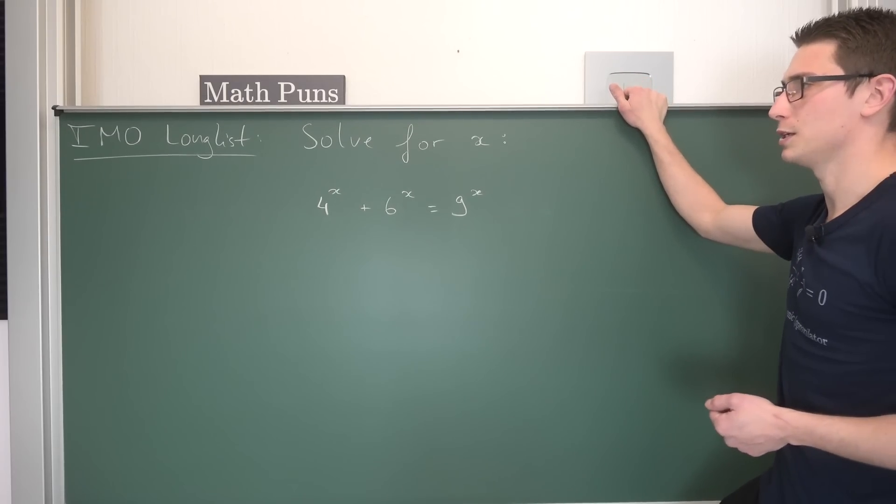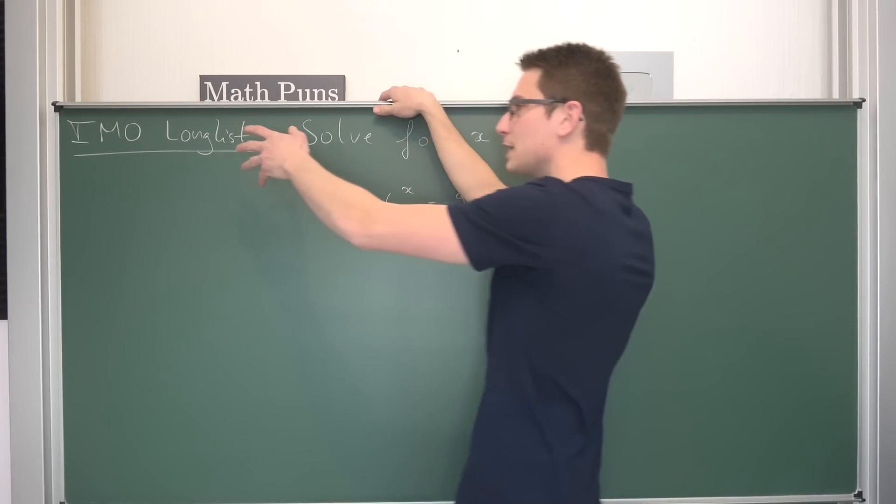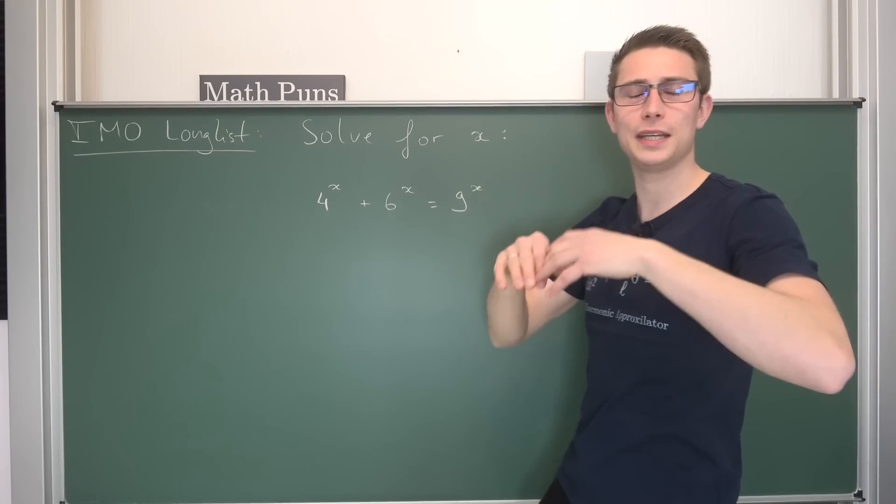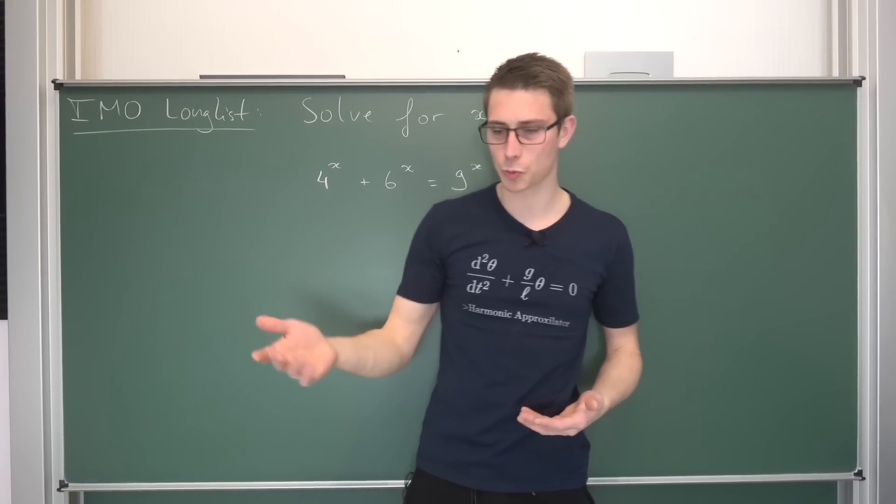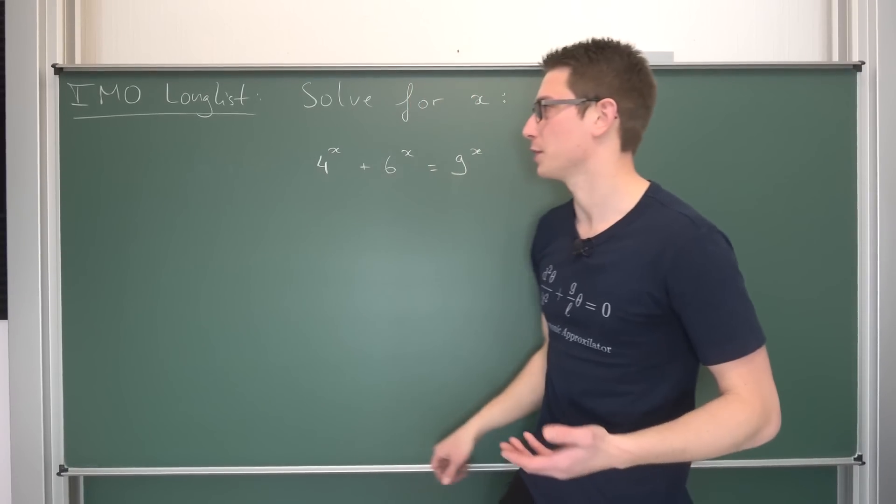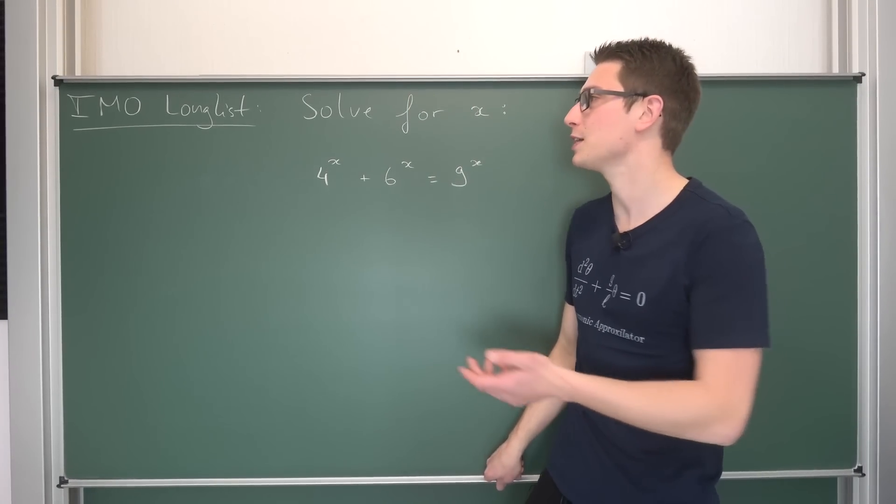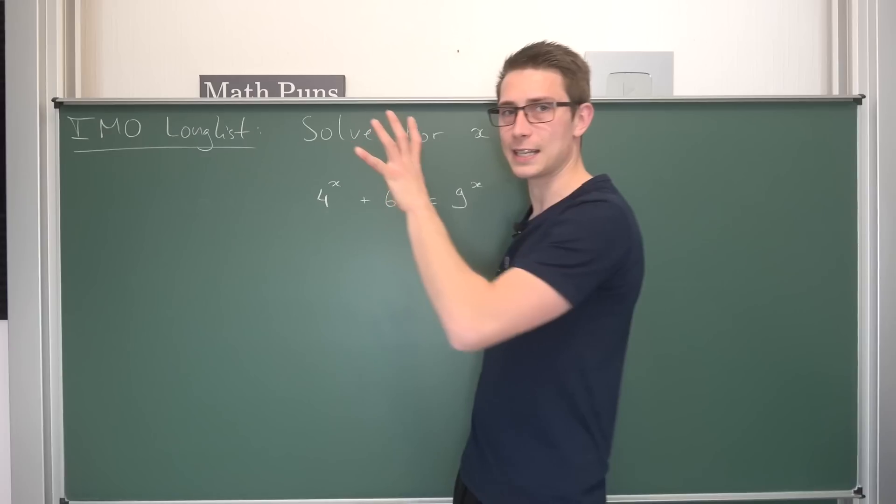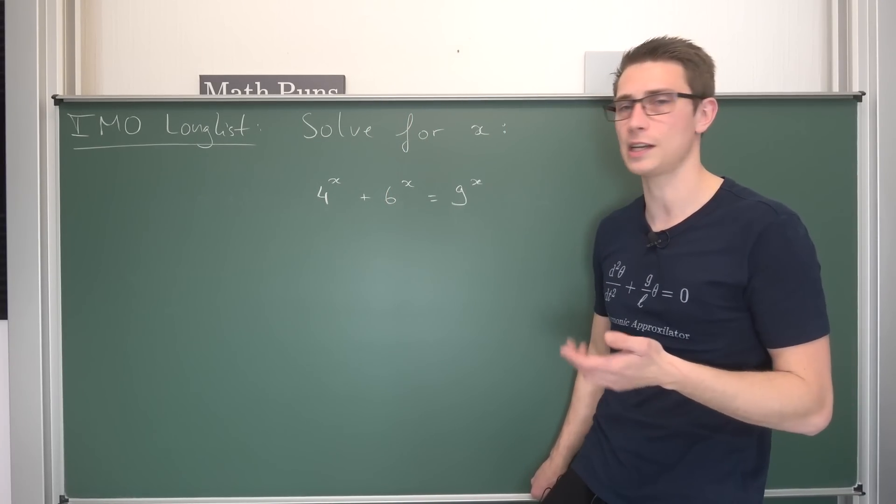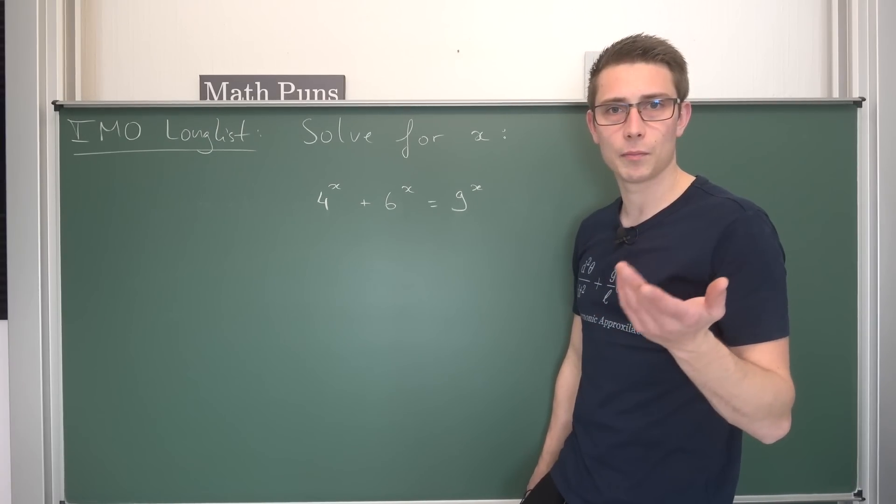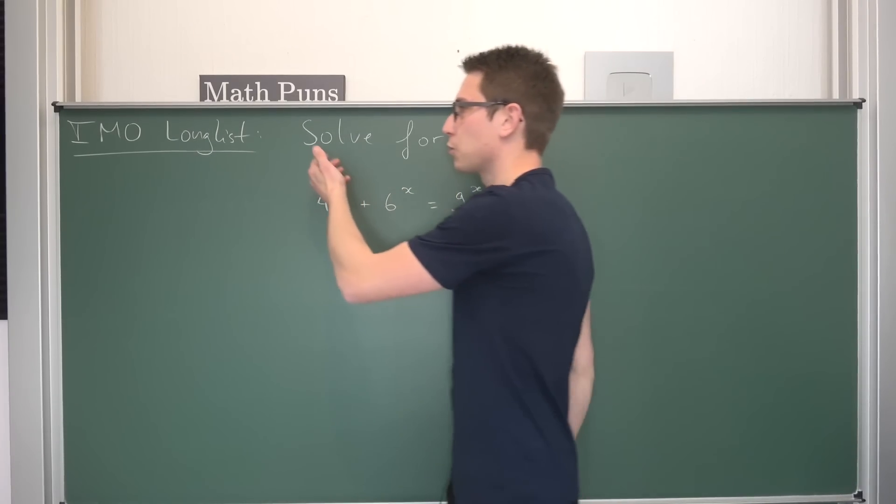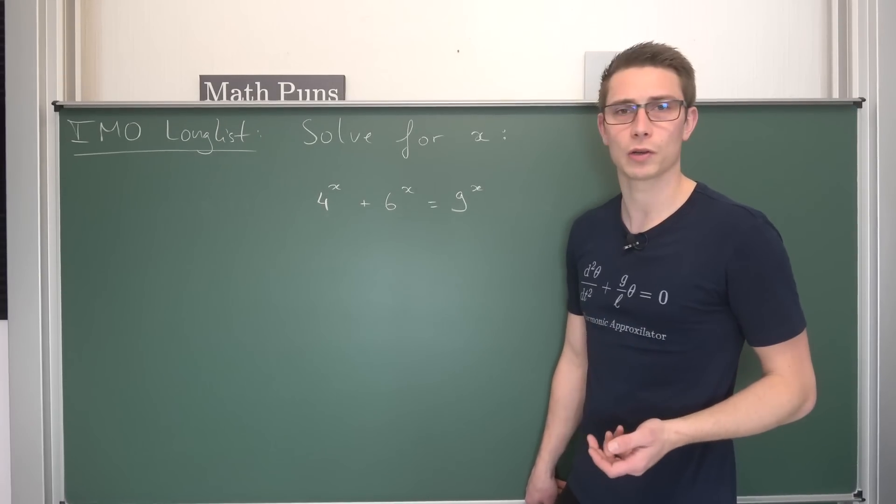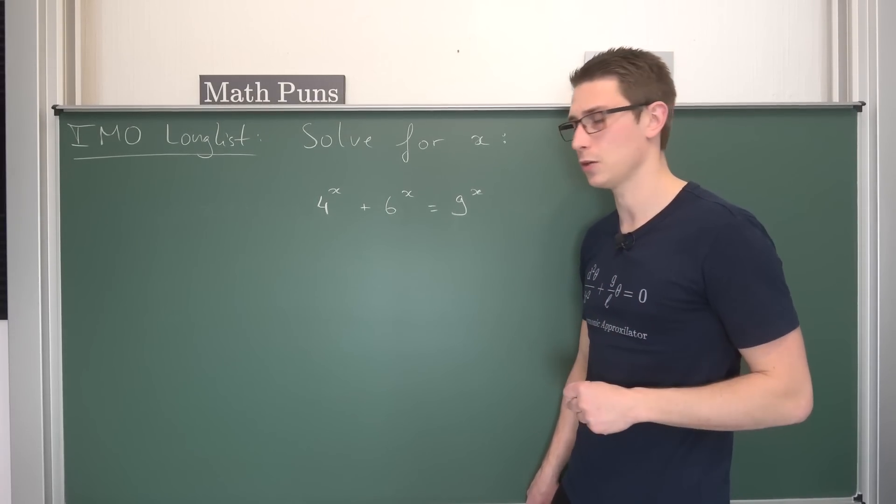So, IMO longlist. If I'm not mistaken, this is the list of problems that will basically be in the pot of problems that could most probably get into the IMO at some point. There's also the so-called shortlist. I think this is like the second qualification. After a problem gets out of the longlist, it gets into the shortlist and then it will be decided if it lands in the IMO. Sadly, OP didn't say from which year it was from. If you guys know which year this was from and which country the IMO longlist was from, please make sure to let me know down there in the comments.